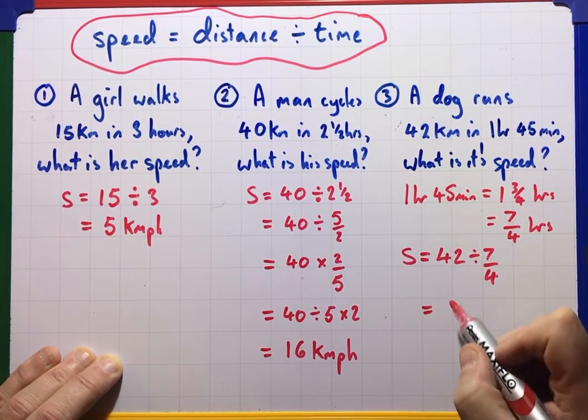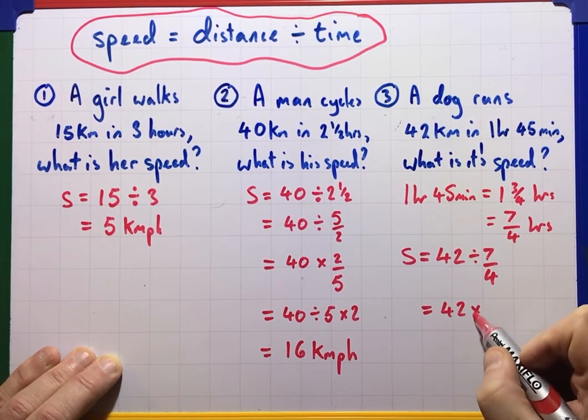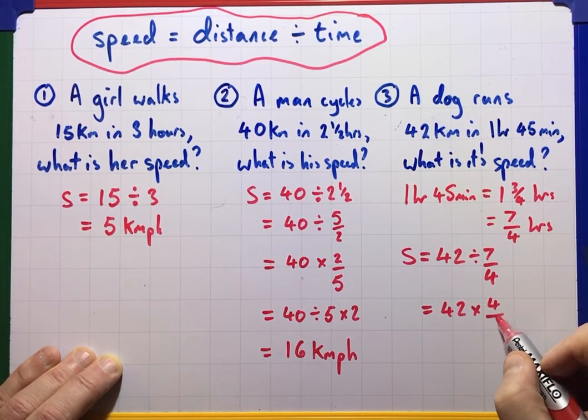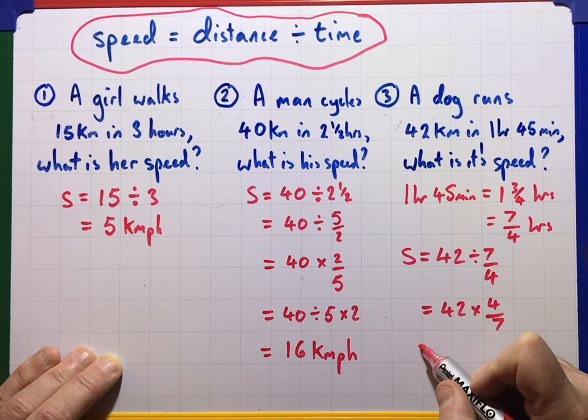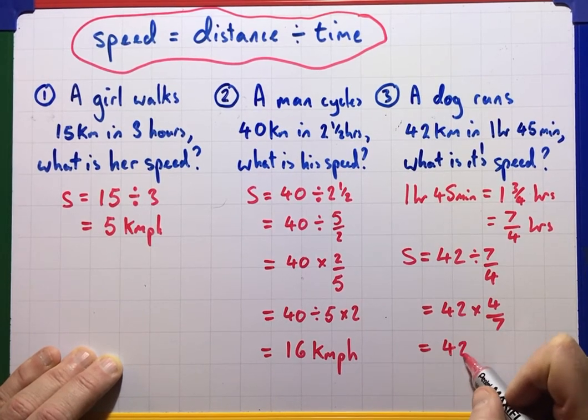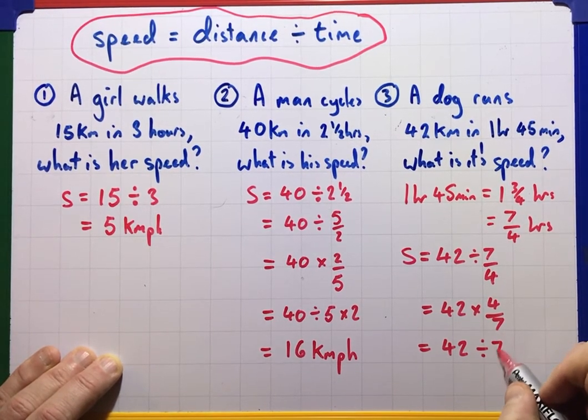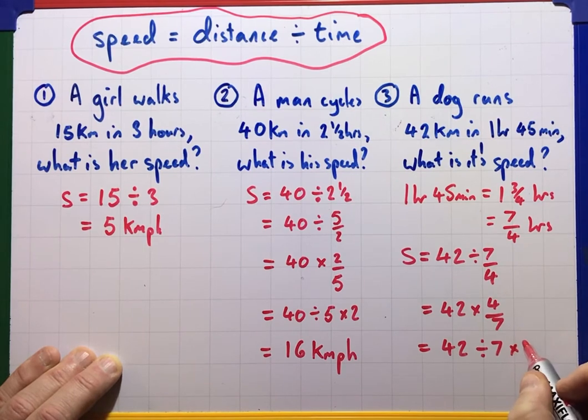Remember, we write that as 42 times 4 over 7. Which is 42 divided by 7, and then times 4.